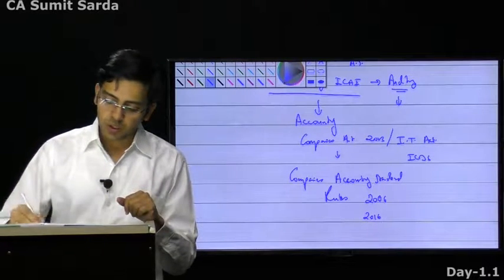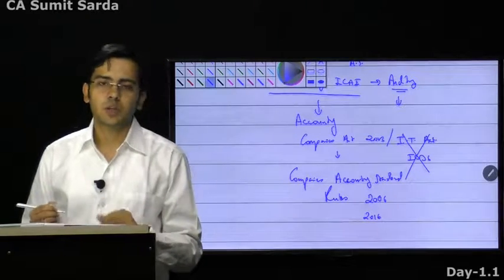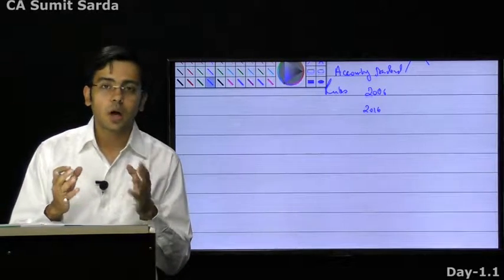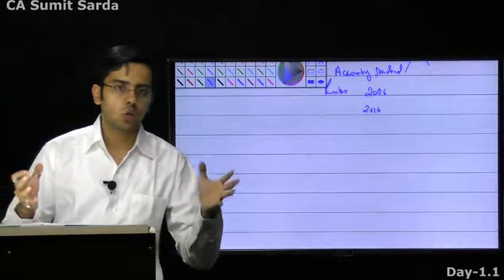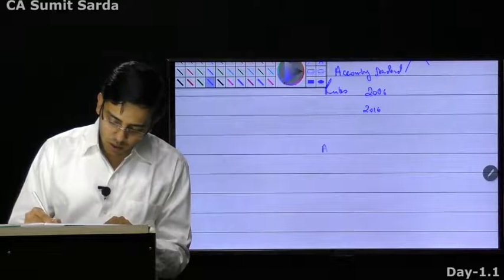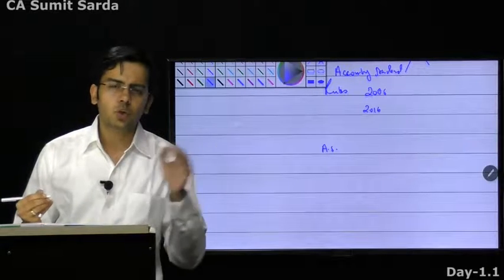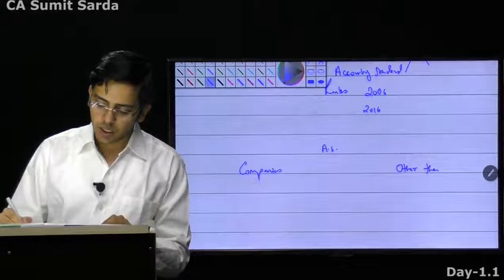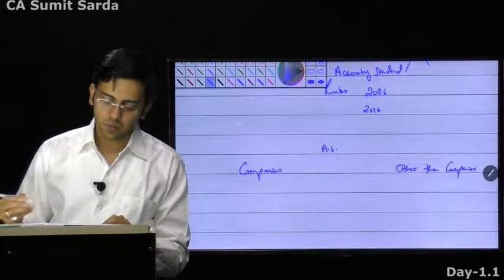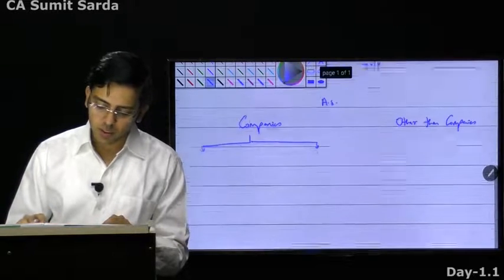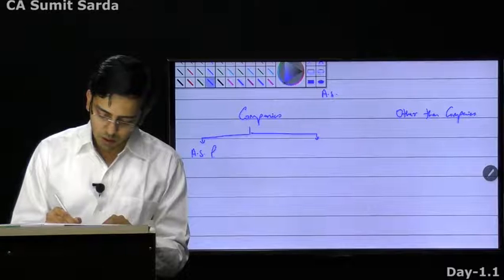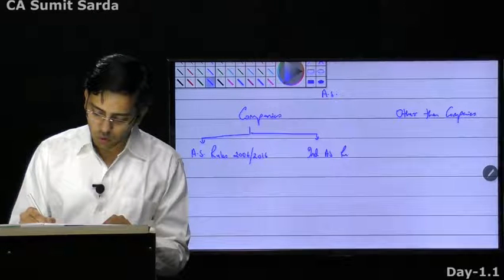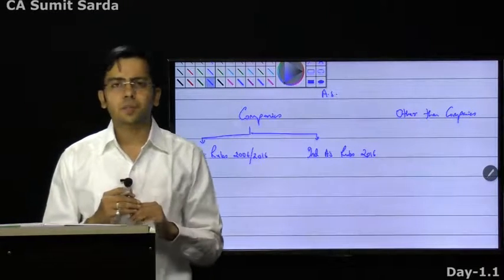These rules are in two sets: 2006 and 2016. We have also seen Companies Indian Accounting Standards Rules turning up under the Companies Act. ICDS I am not going to talk about, but the other three aspects we have to cover. Accounting standards need to be divided into two parts first: for companies, and for other than companies. For companies, we split again into AS Rules 2006/2016 and Ind-AS Rules 2016.